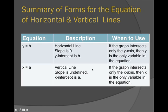This is a summary of the forms of a horizontal and vertical line. A horizontal line is in the form y equals some number, or f(x) equals some number. Whereas for the vertical line, I get x equals some number.